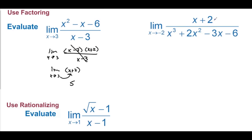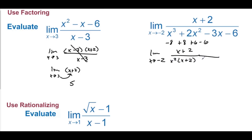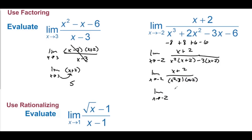The limit as x approaches negative 2 of (x + 2) over (x³ + ...). Plugging in negative 2 gives negative 8 + 8 + 6 − 6 = 0 in the denominator. We factor the denominator: x²(x + 2) − 3(x + 2), giving (x + 2)(x² − 3). The (x + 2) terms cancel, leaving the limit as x approaches negative 2 of 1 over (x² − 3). Plugging in negative 2 gives 1 over (4 − 3) = 1.